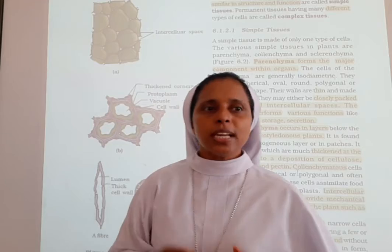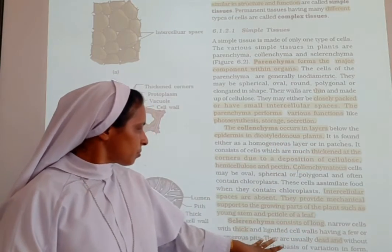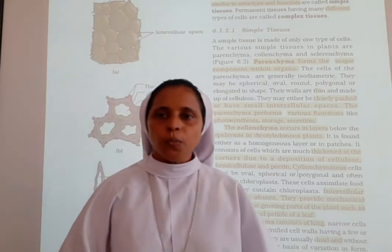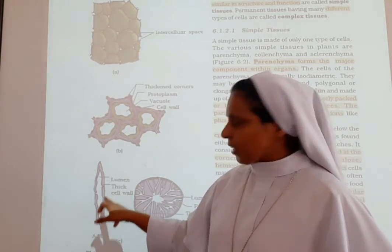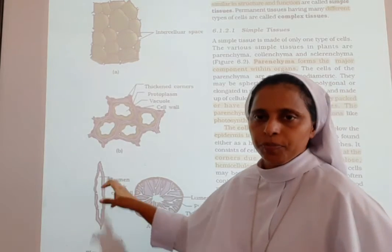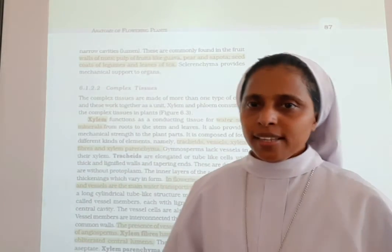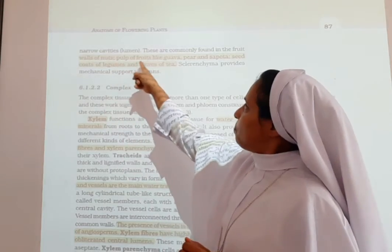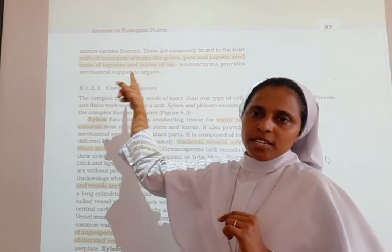Sclerenchyma consists of long, narrow cells with thick, lignified walls. Sclerenchyma cells are dead cells. They are divided into two types: fiber cells and sclereids. Their main function is also to provide mechanical support. Sclereids are found in walls of nuts, pulp of fruits like guava, sapota, pear, seed coats of legumes, and leaves of tea. These are important points to remember.